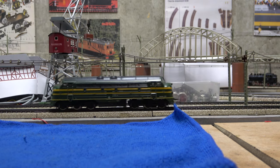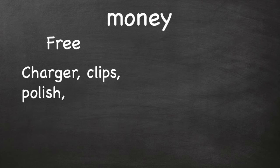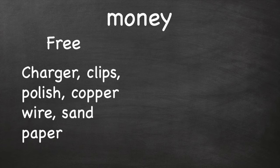Now, let's recap a bit. How much did I spend? Let's start with the money. As you could see, the process requires stuff that most of us will already have laying around somewhere. So, the charger, the crocodile clips, the polish, the copper wire, the sandpaper, were all free. To make the solution, I needed some salt, which was also free. I had some in the cupboard, like everyone.